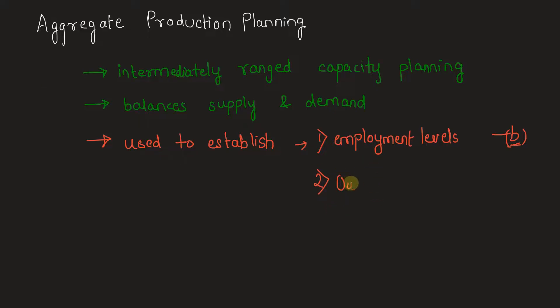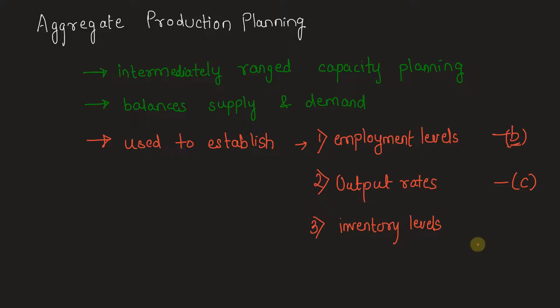The second thing established by aggregate production planning is the output rates — the rate at which production is happening — given in option C. The third one is inventory levels, which denotes the amount of resources available, giving us an idea of inventory. This is given in option D. So all the activities in options B, C, and D are related to aggregate production planning.